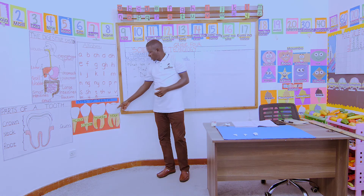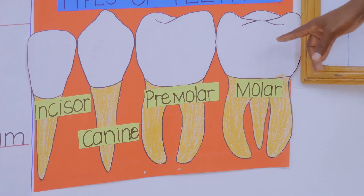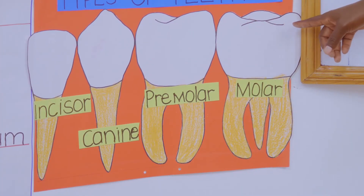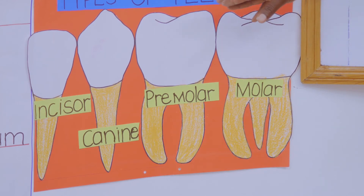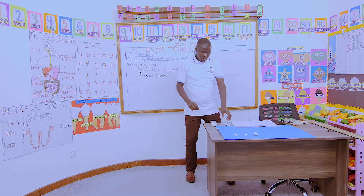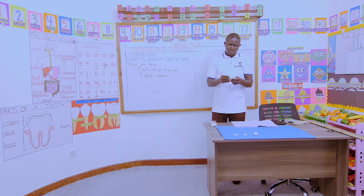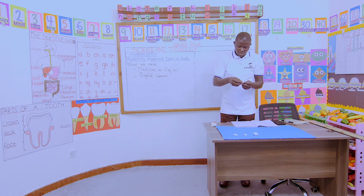Can we now go to tooth number four — the molar tooth. It almost resembles the premolar, but the difference is it has three roots. So we'll model the molar the same way as the premolar, but with three roots. Those with plasticine, take your plasticine or clay. We start modeling tooth number four — the molar tooth with three roots.